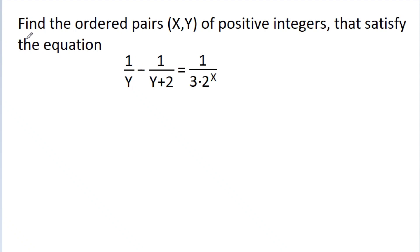In this video, we have to find the ordered pairs (x, y) of positive integers that satisfy the equation 1/y minus 1/(y+2) is equal to 1 divided by 3 times 2 to the power x.